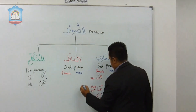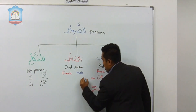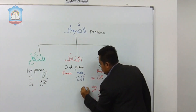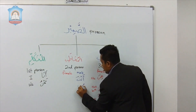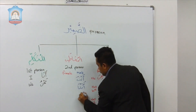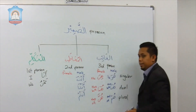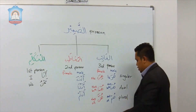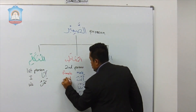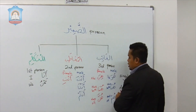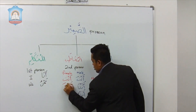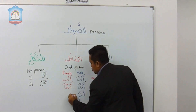The three for male are: singular male — anta, dual male — antuma, plural male — antum. And the three for female are: singular female — anti, dual female — antuma, same as the male, and plural female — antunna.